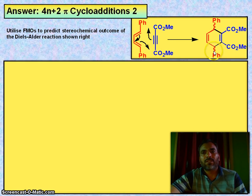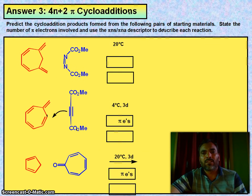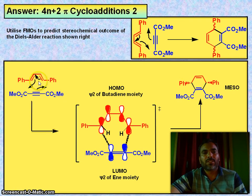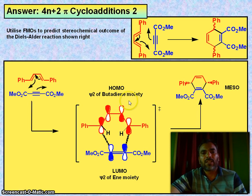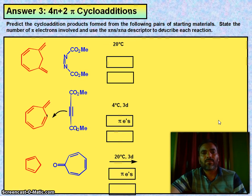You see this: utilize FMO to predict stereochemical outcome of Diels-Alder reaction shown right, this one. So look at this. If you have this diene, you have dienophile. This is the LUMO of dienophile and HOMO of diene. HOMO of butadiene moiety and LUMO of ene moiety, same phase forming this product, meso.